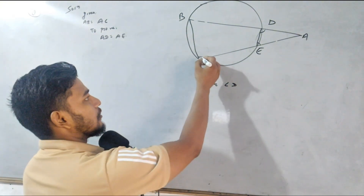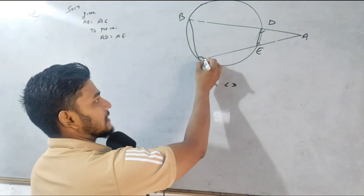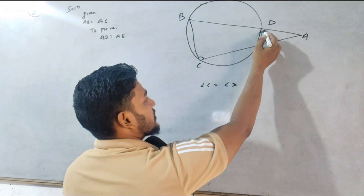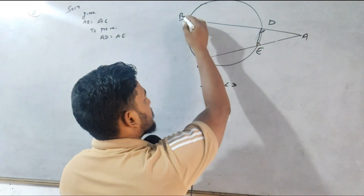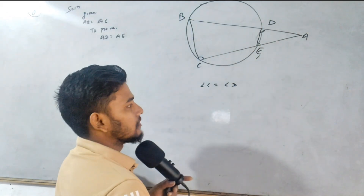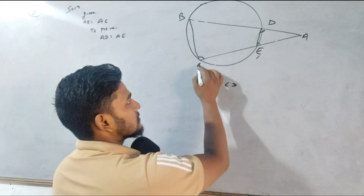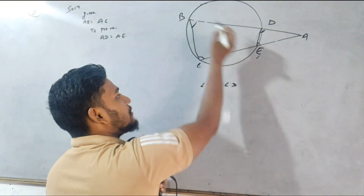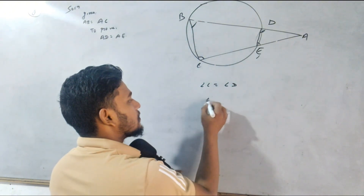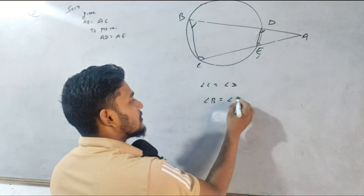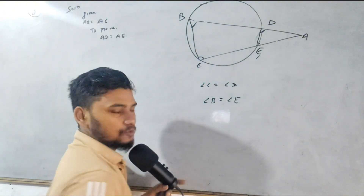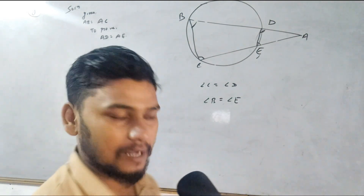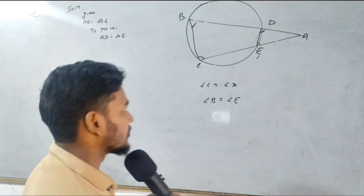What is the interior angle of a cyclic quadrilateral equal to the exterior angle? BCDE is a cyclic quadrilateral. Angle C is equal to angle D. In the same way, angle B is equal to angle E.